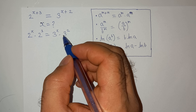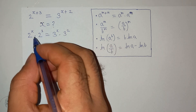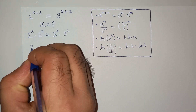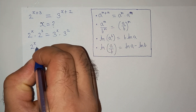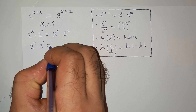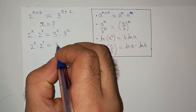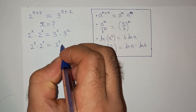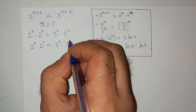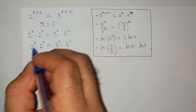Let me write this equation again: 2 power x multiplied by 2 power 3 equals to 3 power x multiplied by 3 squared.